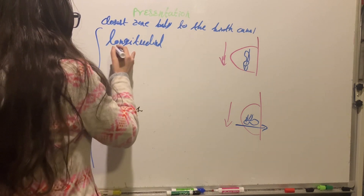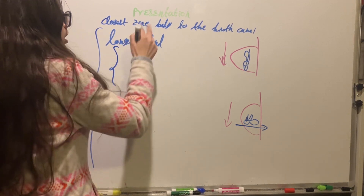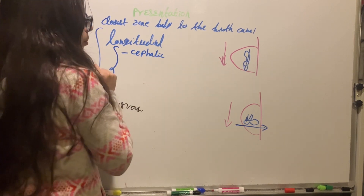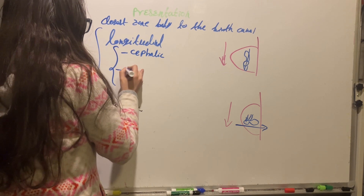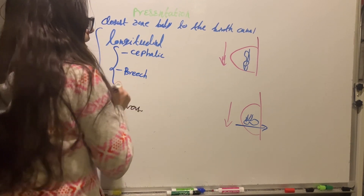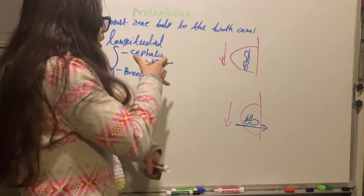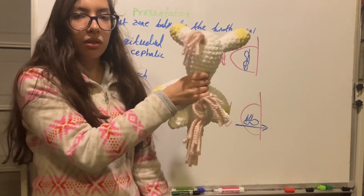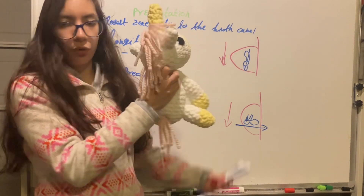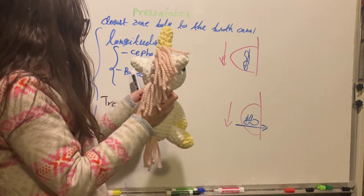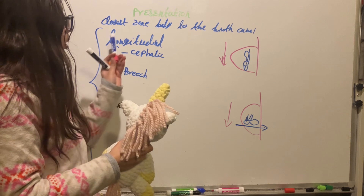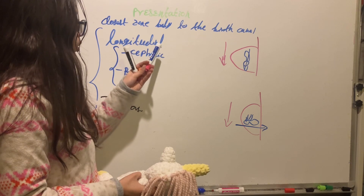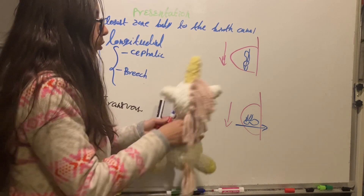With longitudinal orientation, we can have two kinds of presentation: cephalic presentation or breech presentation. The fetus can be oriented head-down or bottom-down, both being longitudinal. We can have a longitudinal orientation with cephalic presentation or longitudinal orientation with breech presentation.